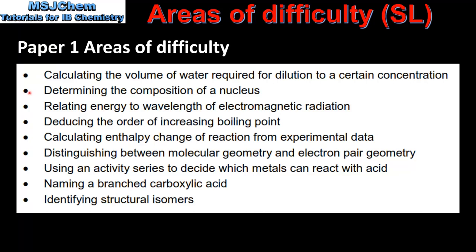Next we have determining the composition of a nucleus. The nucleus is made up of nucleons which are protons and neutrons. The mass number tells you the number of nucleons in the nucleus of an atom. The atomic number tells you the number of protons in the nucleus. If you subtract the atomic number from the mass number you get the number of neutrons in the nucleus.